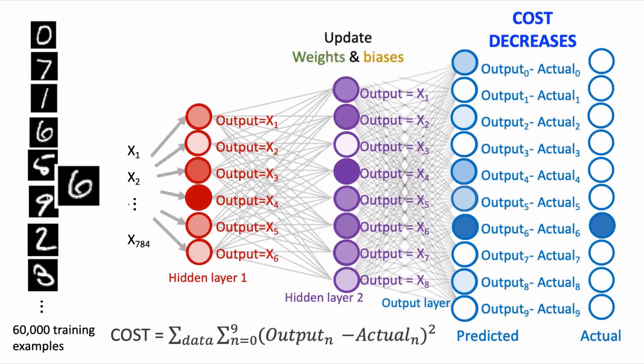So every time the cost reduces, the weights and biases will have nudged in a way such that the outputs of each layer are causing the output of the next layer to cause the final output of our network to be closer to the actual answer, which is a 1 for the digit being shown, and a 0 for all the other neurons corresponding to the digits not being shown.